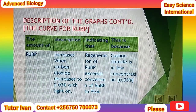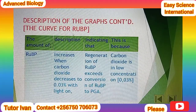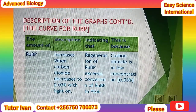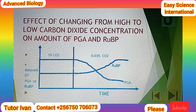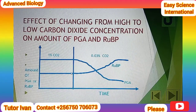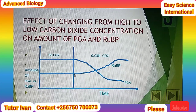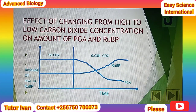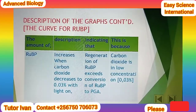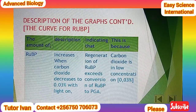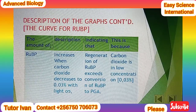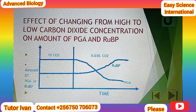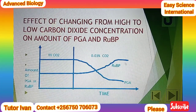Now, looking at the curve for RUBP — that is ribulose bisphosphate — we are seeing that from the steady-state level, reduction in concentration of carbon dioxide increases the amount of RUBP. Therefore, the amount of RUBP increases when carbon dioxide decreases to 0.03% with light on. RUBP amount just increases. Why is that, and what does this indicate?